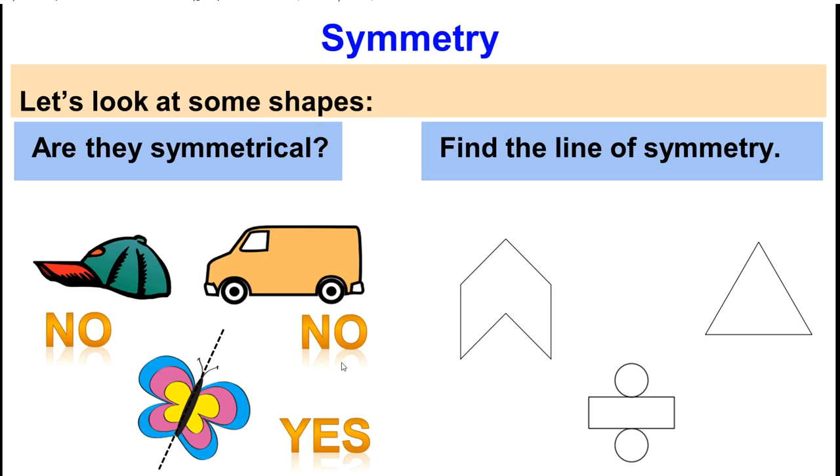Now let's try to find the line of symmetry for these shapes. How many lines of symmetry do you think this shape has got? Good job. It has got one line of symmetry vertically.